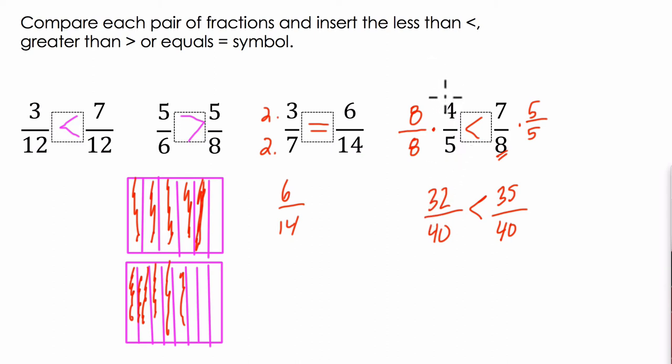And 35 40ths must be bigger than 32 40ths. Another way to reason this is some students will say, okay, well, four out of five, it's missing one-fifth. And what they might mean by that is it's one-fifth less than one.